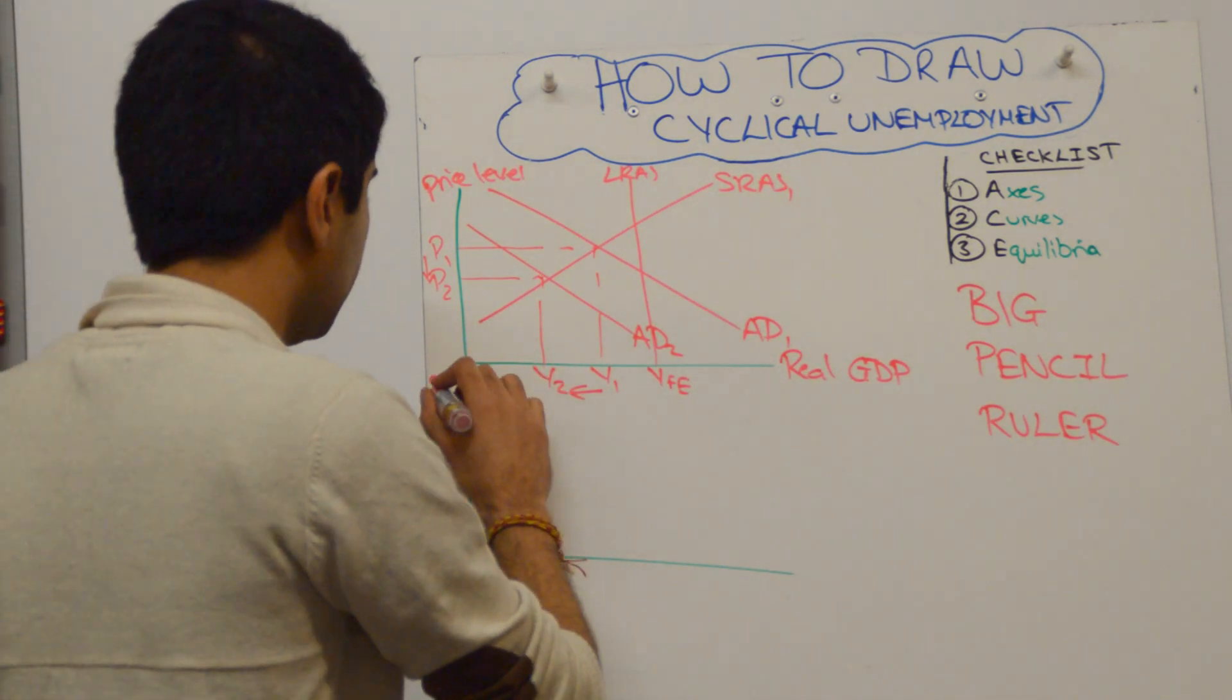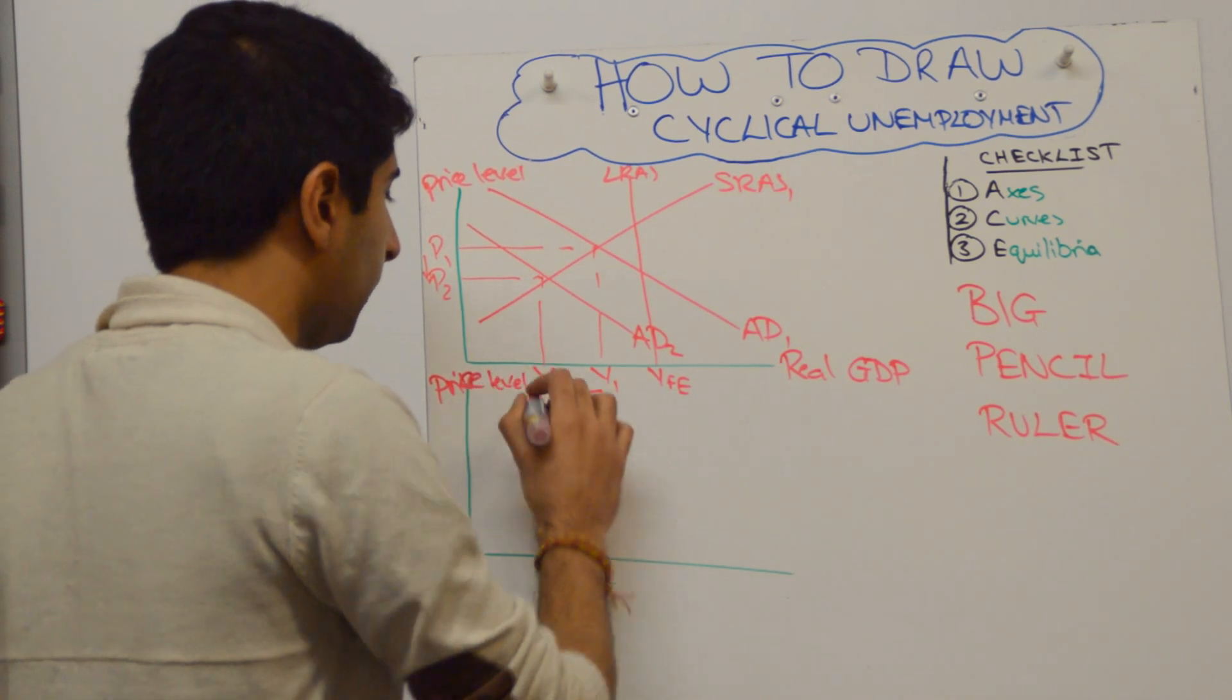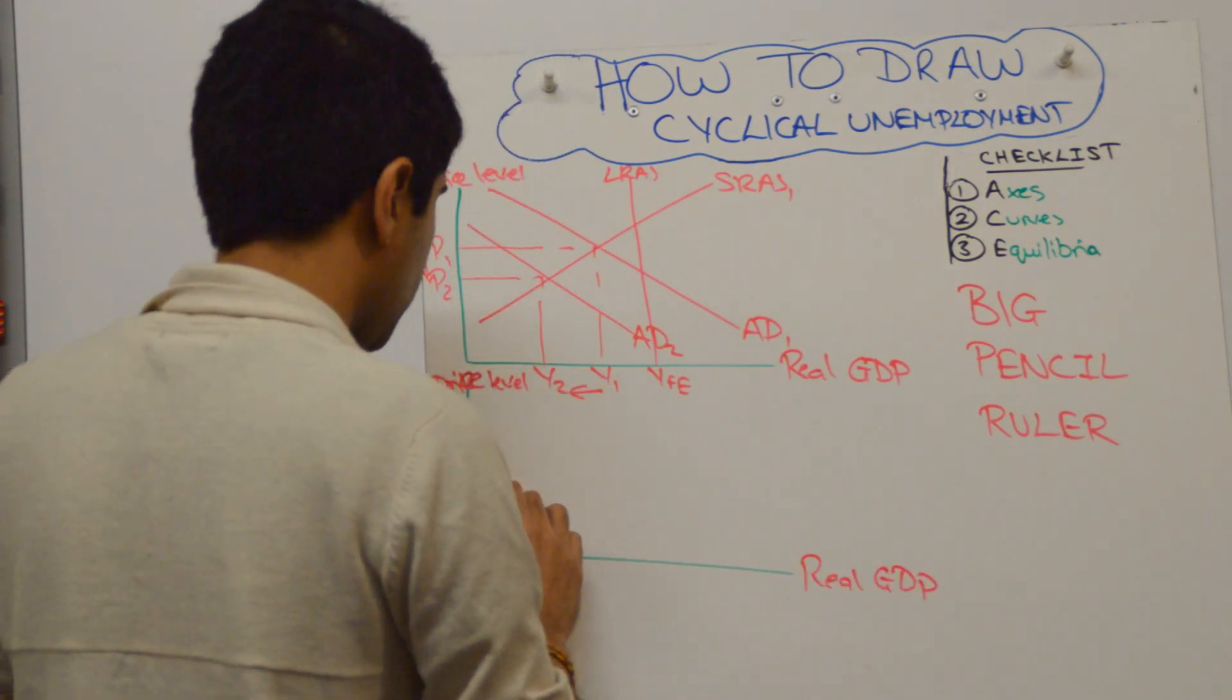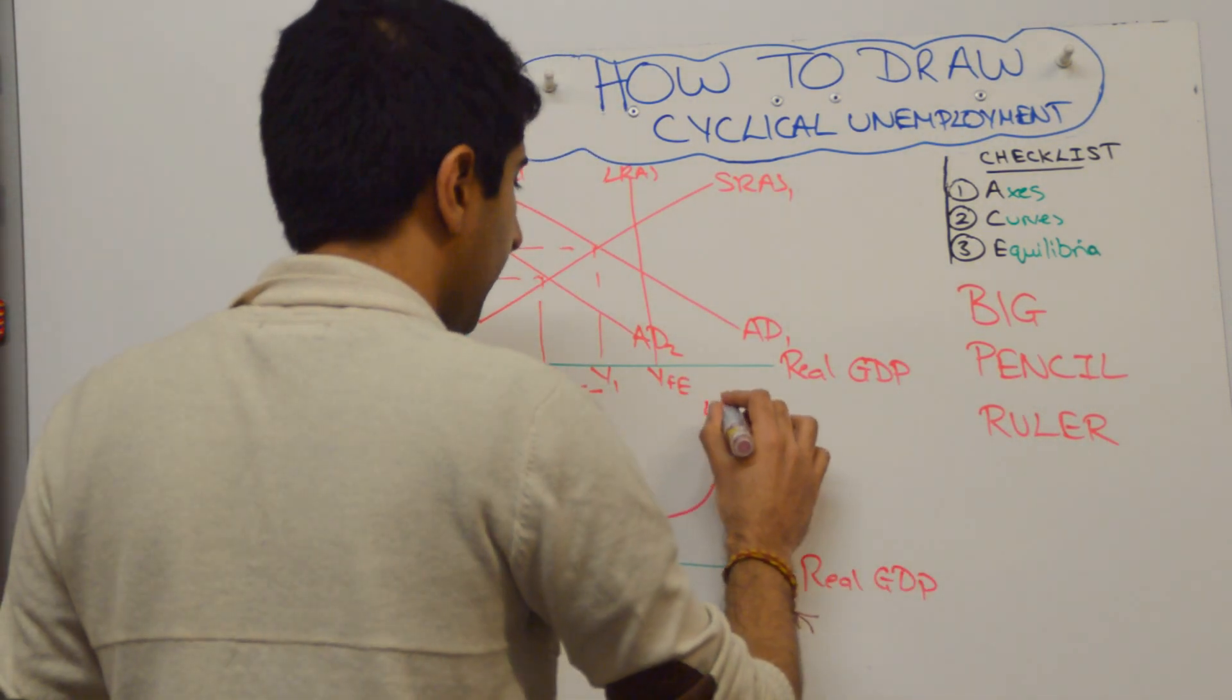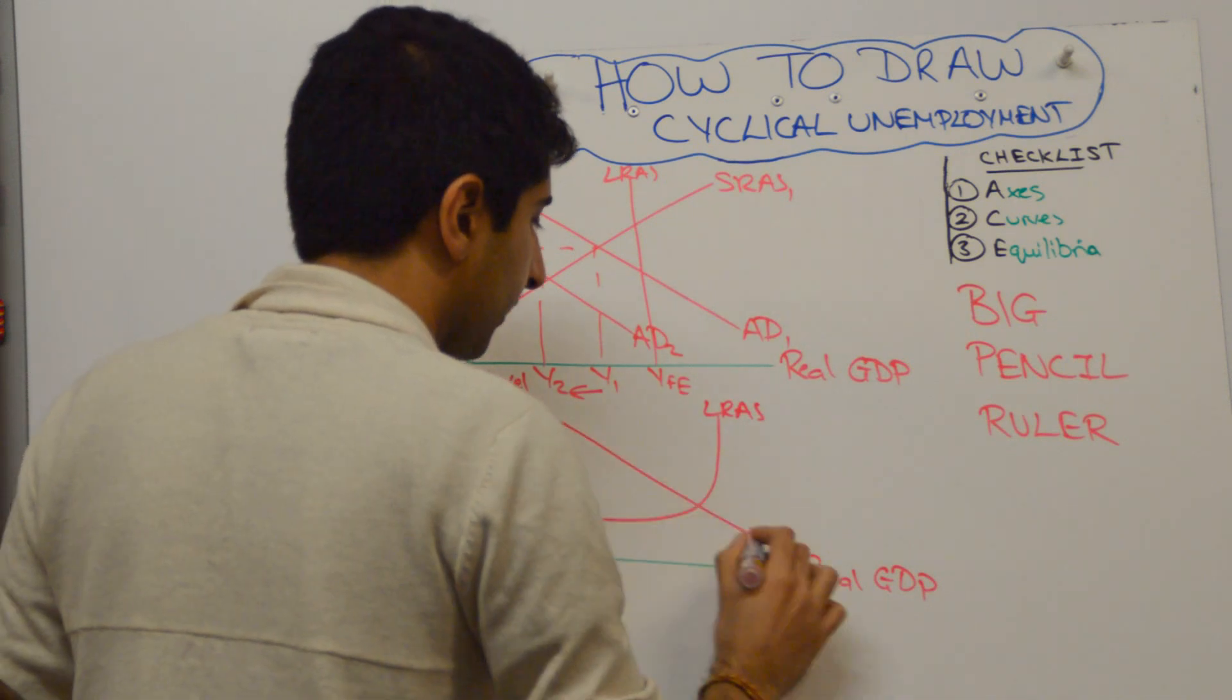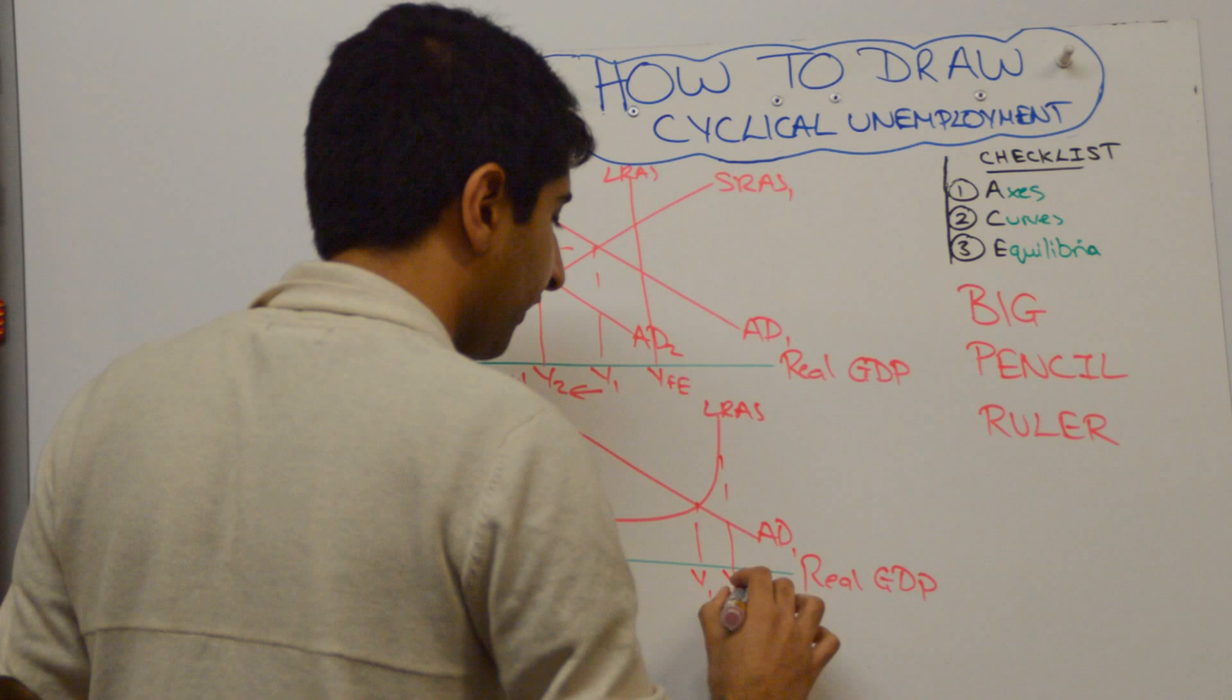In the Keynesian model, it's the same idea. Okay, so price level on the y-axis, real GDP on the x-axis. Show your Keynesian LRAS like that. Okay, so start with aggregate demand over here somewhere. Y1 in relation to YFE.